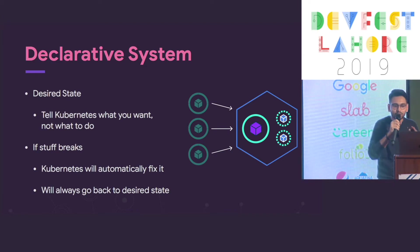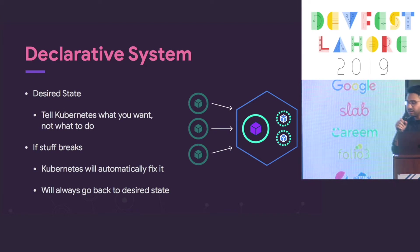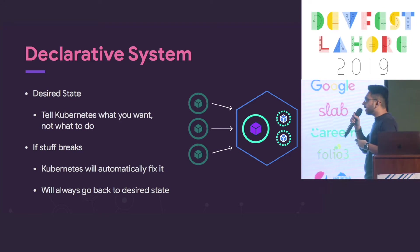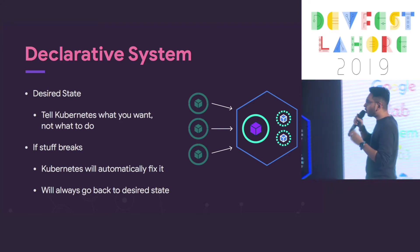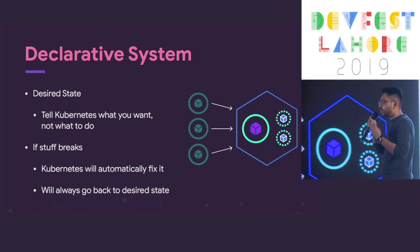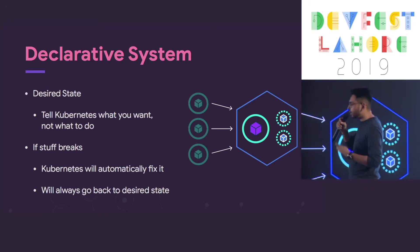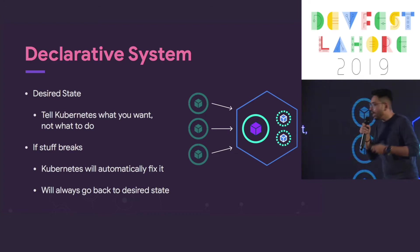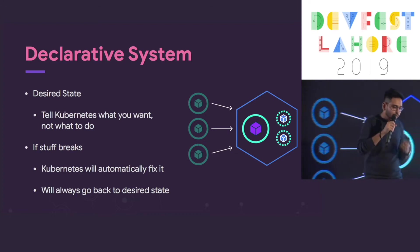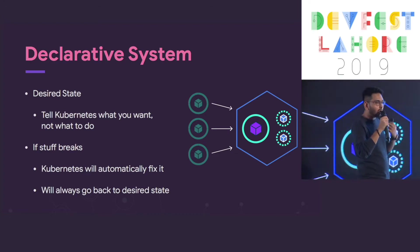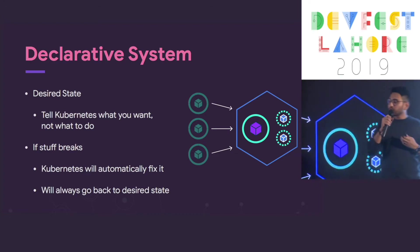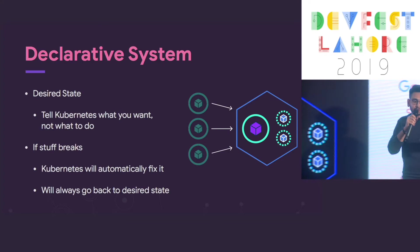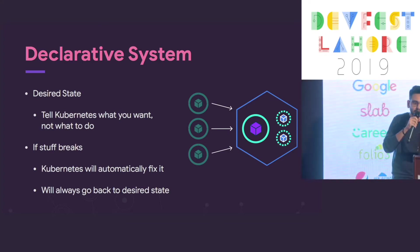That's almost exactly what it is. It's possible because of the desired state concept. You just tell the system what you need, and the system will make it happen for you. And if something breaks, Kubernetes will automatically try to recover it to the desired working system state.